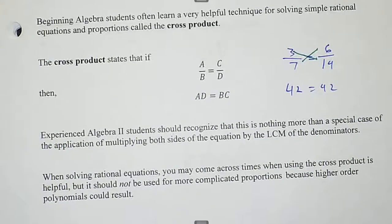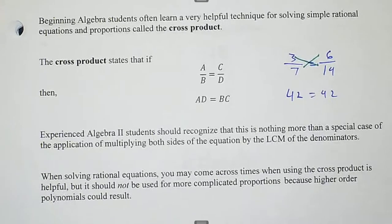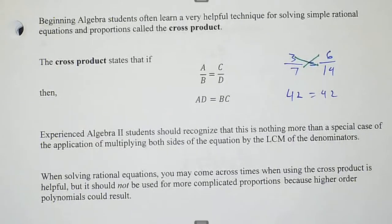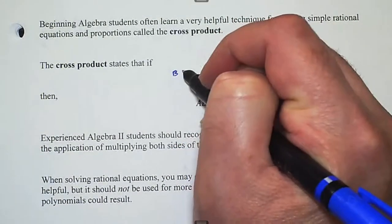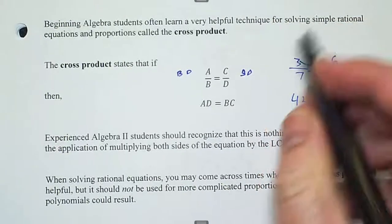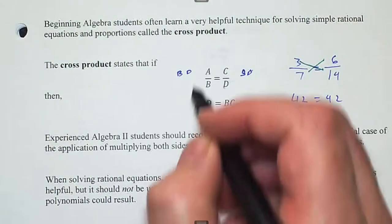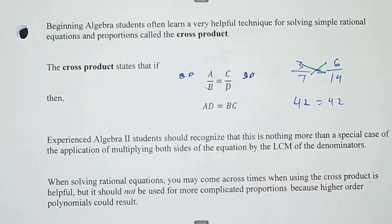Experienced algebra 2 students should recognize this is really just a special case of multiplying by the LCM. Your junior high math teacher probably told you to use the cross product — maybe even drew a butterfly over it. The least common multiple of b and d is bd, so if I multiply by bd, the d's cancel leaving b times c, and the b's cancel leaving a times d. The cross product is nothing more than a result of multiplying by the least common multiple.